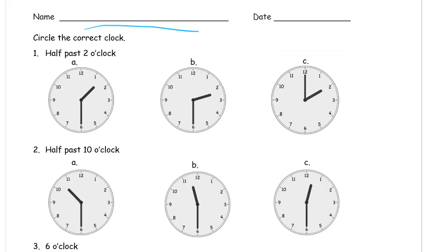For number 1, it says we want half past 2 o'clock. For all these half past numbers, we want the minute hand — it's the long hand. A memory key I like to use is that the word minute is longer than the word hour, so the minute hand is longer than the hour hand. It kind of helps you remember which one is which.